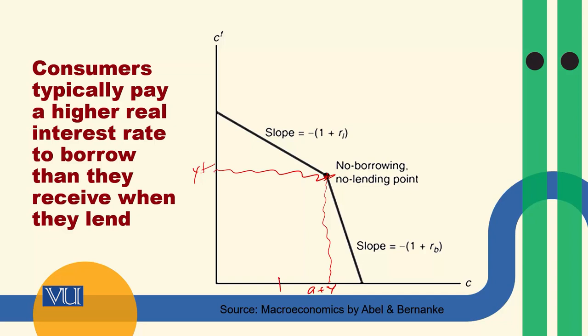اس point سے اگر آپ left کی طرف move کریں — مثلاً اگر consumer یہاں پر ہے — تو اس کا مطلب ہے کہ اس کی current consumption اس کے current available resources سے کم ہے، یعنی وہ lending کی position میں ہے۔ اور اس point سے right کی جانب آئیں تو اس کا مطلب یہ ہے کہ وہ borrow کر رہا ہے — current period میں جو resources available تھے ان سے وہ زیادہ spending کر رہا ہے۔